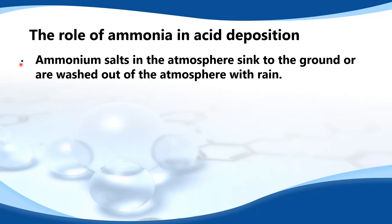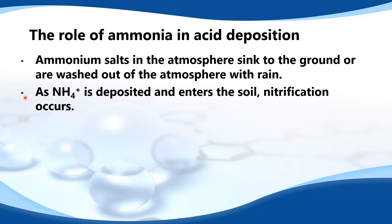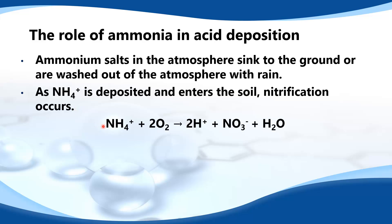Ammonium salts in the atmosphere sink to the ground or are washed out of the atmosphere with rain. As the ammonium ion is deposited and enters the soil, nitrification occurs. Here's the equation: NH4+ plus 2O2 makes 2H+ plus NO3- plus H2O.